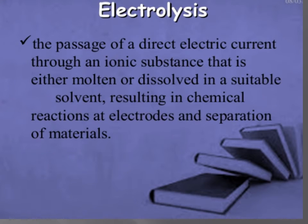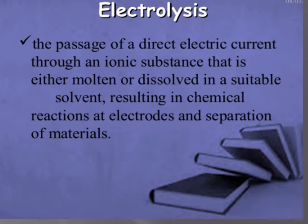Electrolysis is an example of thermal decomposition. It refers to the process in which a direct electric current is passed through an ionic substance, either in molten state or dissolved state, resulting in a chemical reaction at the electrodes and leading to the separation of materials. The best example is the electrolysis of water, where water decomposes into hydrogen and oxygen on passing of current through it.